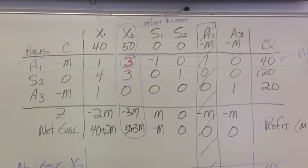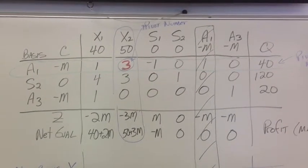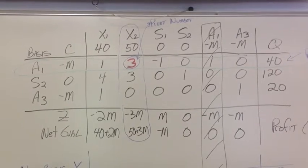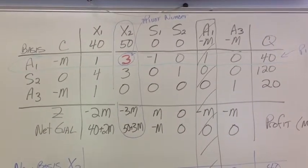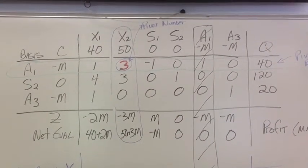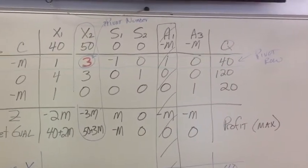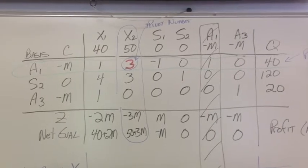Okay, now we have to figure out how to get our entering variable, x2, in the basis for our leaving variable, a1. You notice I circled the 3 there, that's usually called the pivot number, and the leaving row is also called the pivot row.